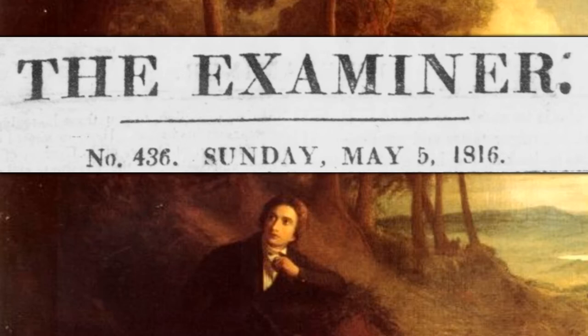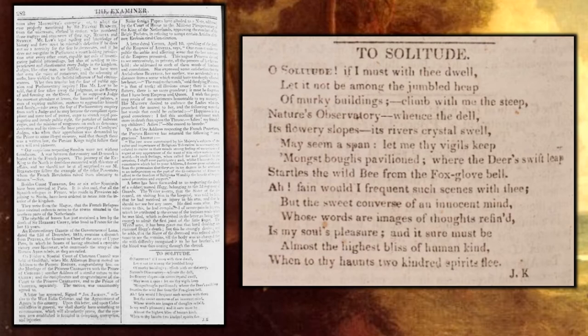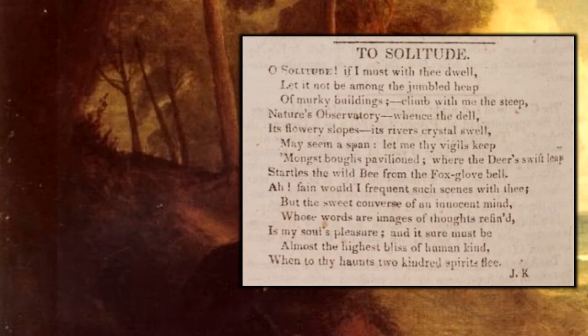Today I'm going to be looking at John Keats's first published poem, which was published in The Examiner for the 5th of May 1816. The poem itself was a sonnet called 'To Solitude,' and it appeared amongst the political articles that were typical of Leigh Hunt's paper The Examiner. It was sort of pseudo-anonymous — the initials JK are included at the bottom. Today I'm going to be focusing on Keats's playful irony and his use of paradox, which runs all the way through the poem.